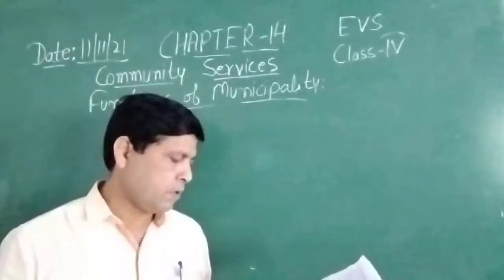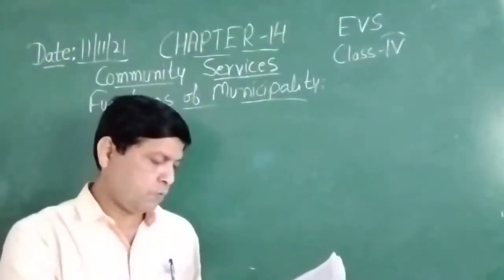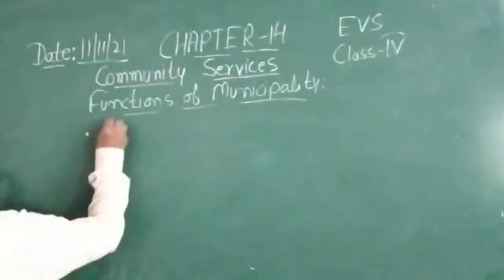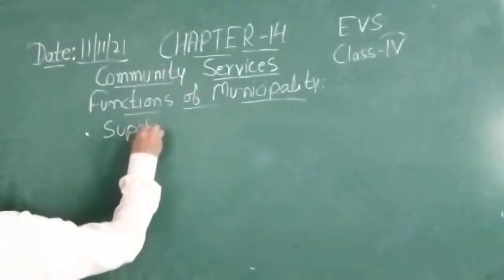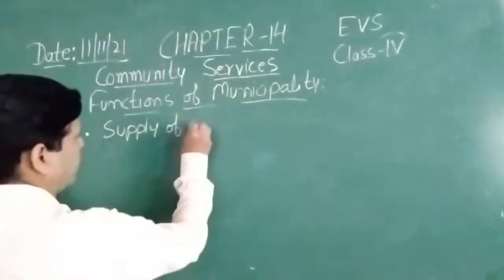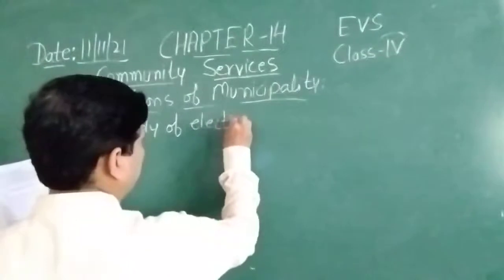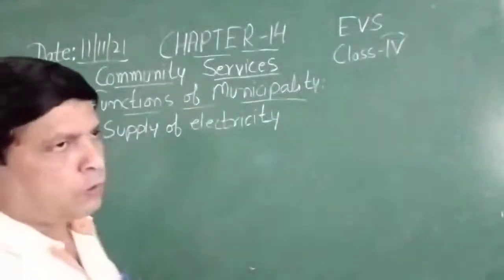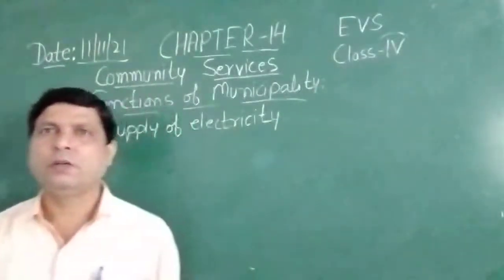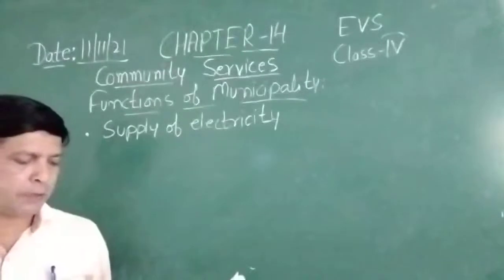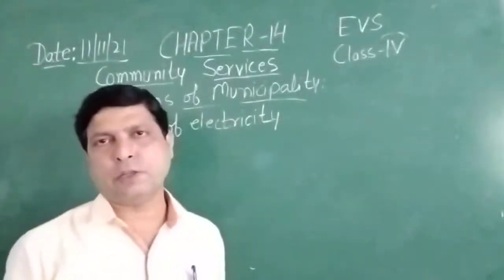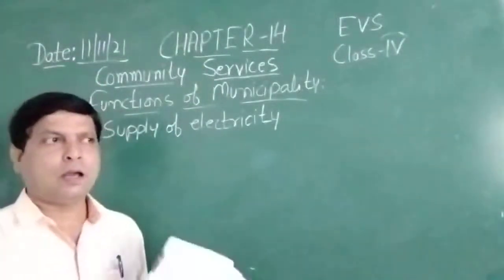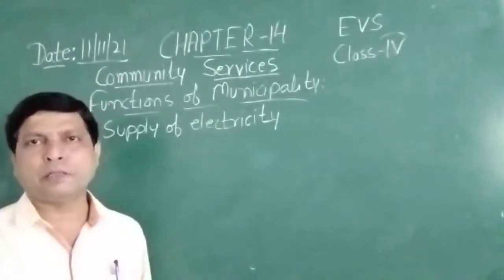Let's start from function number 6, which is to ensure supply of electricity. This is also one of the most important services — the supply of electricity to homes and the lighting of the street. In the present time, electricity has also become our basic need.